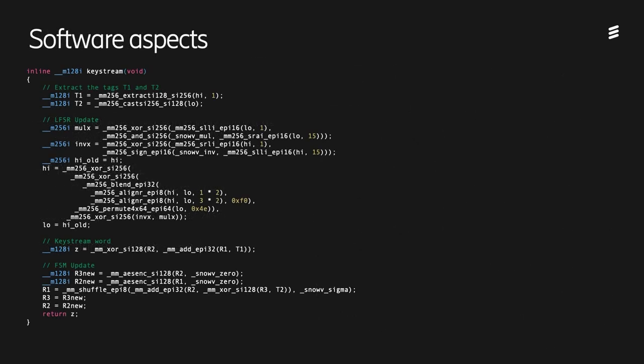Now we look at the software implementation aspects of SNOW-V. Here is a complete implementation of one clocking of the cipher producing a 128-bit key stream value, implemented using Intel vector instructions. As you can see, it's very compact. Most of the time is spent doing the LFSR update, and the finite state machine update can be accomplished in just a few lines of code. This, of course, reflects in the software speed of the cipher.